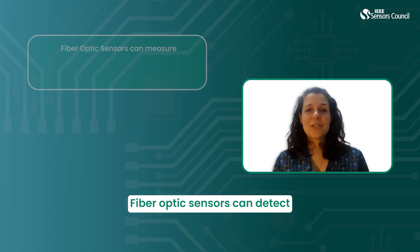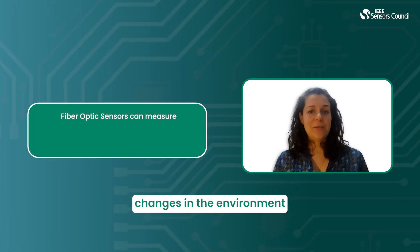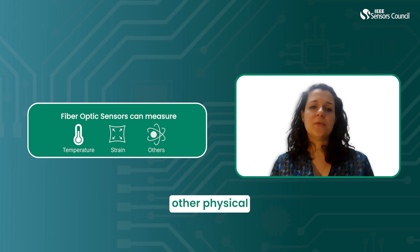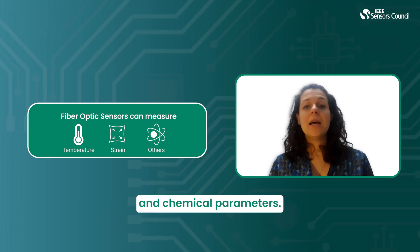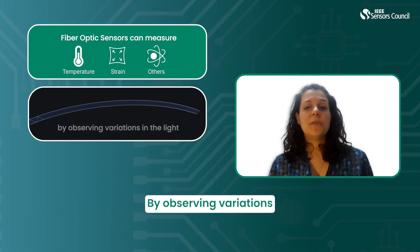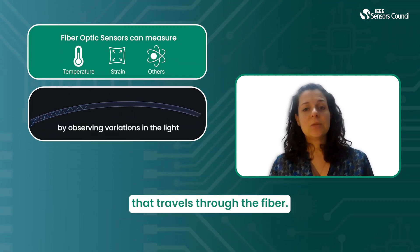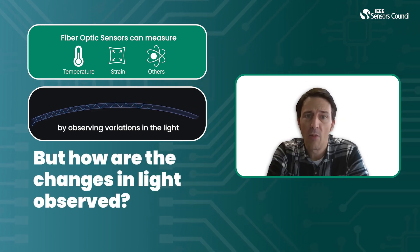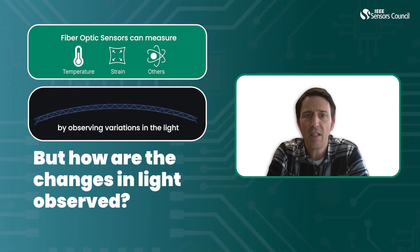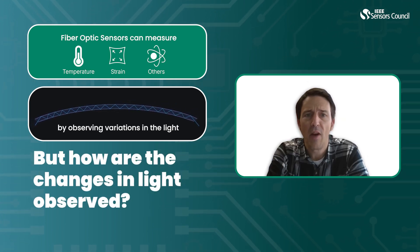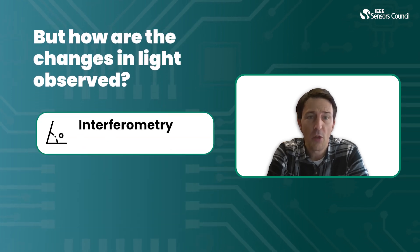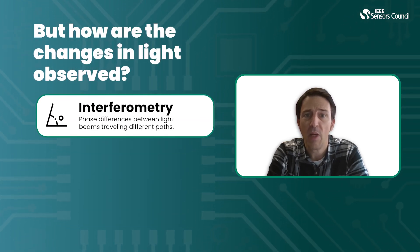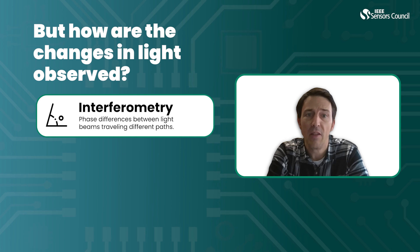Fiber optic sensors can detect changes in the environment like temperature, strain and other physical and chemical parameters by observing variations in the light that travels through the fiber. Several methods are employed to analyze changes in light within fiber optic sensors. Interferometry measures phase difference between light beams traveling different paths.